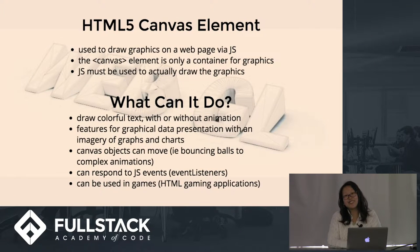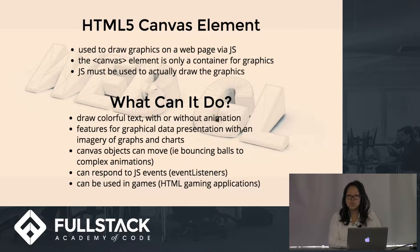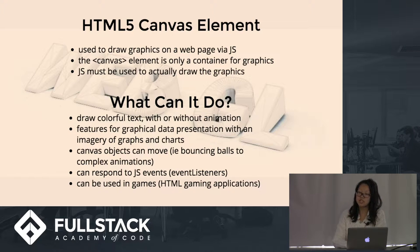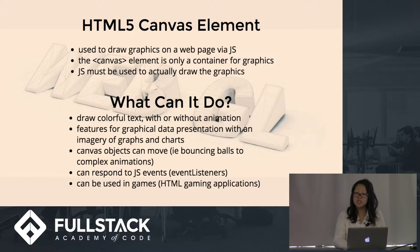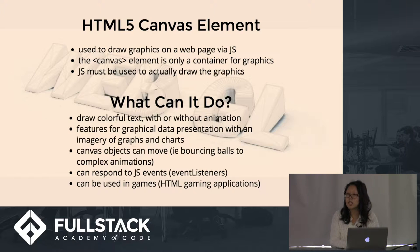WebGL uses the HTML5 canvas element to render 2D and 3D graphics. Alone, the HTML5 canvas element can be used to draw graphics on the web page with JavaScript — it is only a container, so JavaScript must be used to actually draw the graphics. It can draw colorful text with or without animation, canvas objects can move from bouncing balls to complex animations, it can respond to JS events such as event listeners, and it can be used in HTML gaming applications.